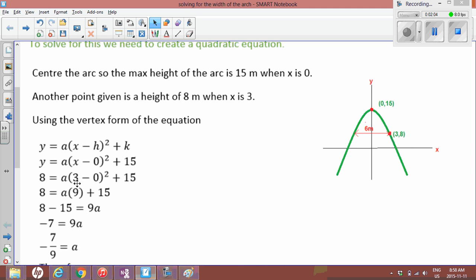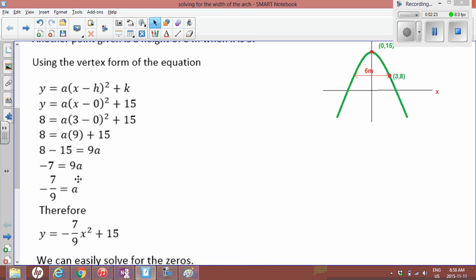And then we're going to solve for a. So 3 minus 0 squared is 9, and then we are going to try and isolate a. So 8 minus 15 is equal to 9a, then 8 minus 15 is negative 7 equals 9a. Then we're going to divide both sides by 9 to isolate a. It's negative 7 over 9 equals a.